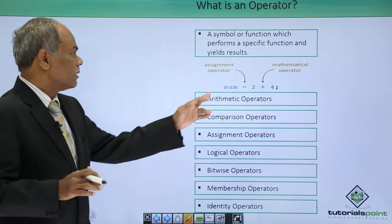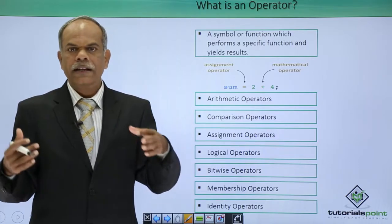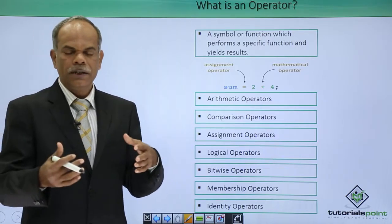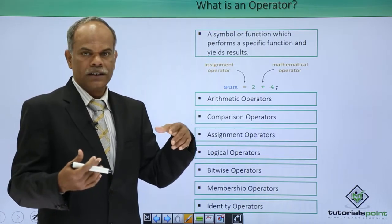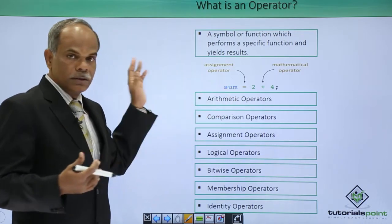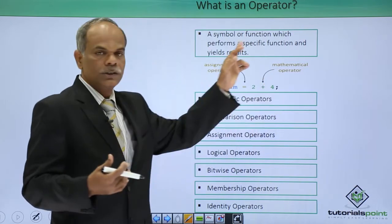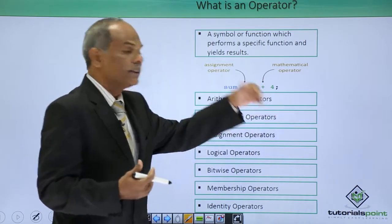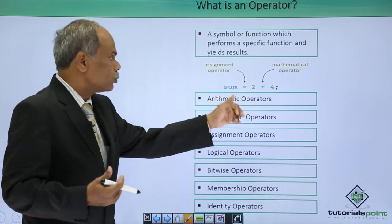For instance, this equal to symbol is predefined in the Python interpreter or in fact in most languages used as the assignment operator. So what happens? The name of the variable is on the left-hand side of the equal to sign, and whatever expression is on the right-hand side will be assigned to it. So the role of this equal to operator is to assign the value.